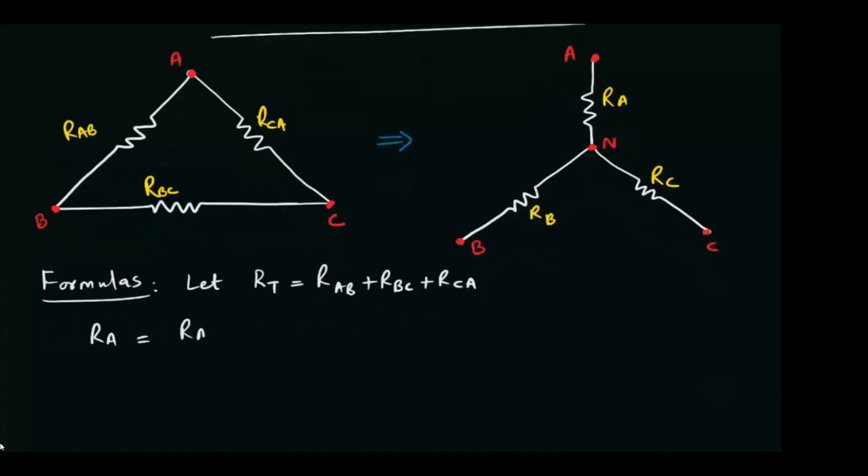Here, RA is equal to RAB multiplied by RAC over RT. RB is equal to RAB multiplied by RBC over RT.